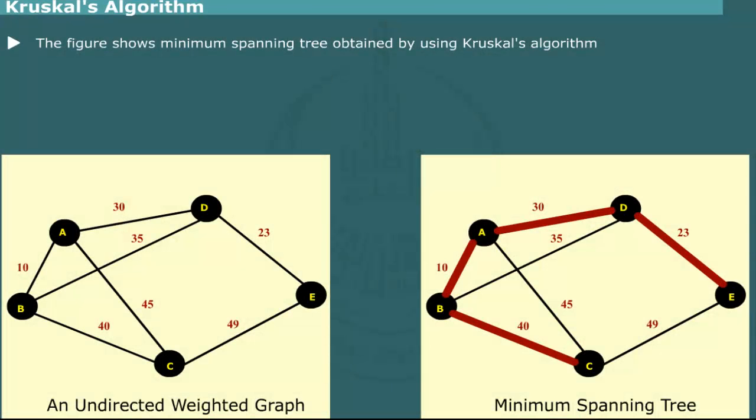This figure shows the minimum spanning tree built by using the Kruskal's Algorithm. The thick lines represent the tree. The total path length of the tree is 10 + 23 + 30 + 40 = 103.